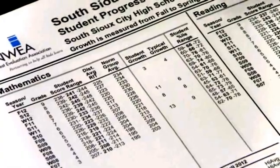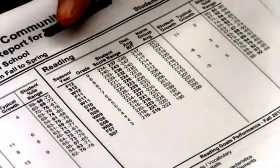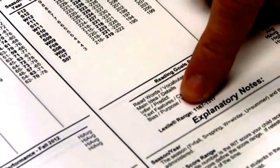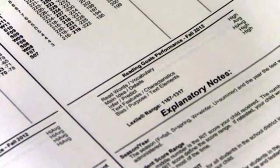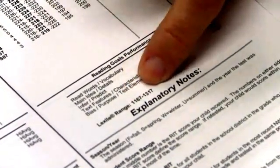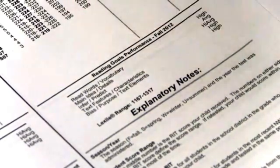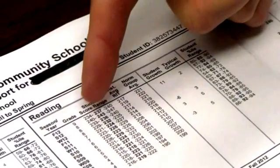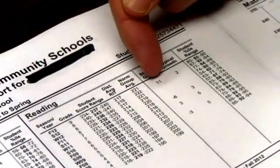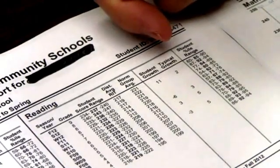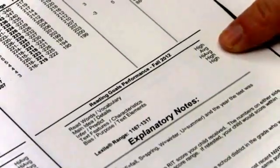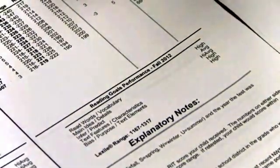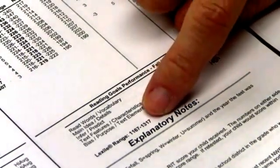Moving on to reading — all of the information remains the same; you're just explaining it for reading. What's different is that at the bottom you'll also see a Lexile range. Lexile ranges are always reported in 150-point increments, so her range is 1187 to 1317. Her reading is quite strong — her score was at the 85th percentile with a 237 in reading. Her growth was 11 points from fall to spring of 2012, where typical is two points. She ranged from average to high across all reading skill areas.